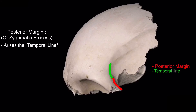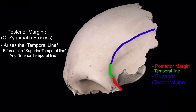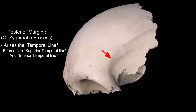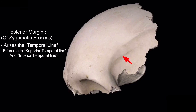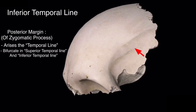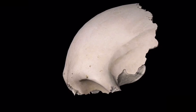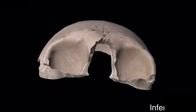The temporal line, as it moves upward, bifurcates into the superior and inferior temporal lines. This is the superior temporal line and this is the inferior temporal line.